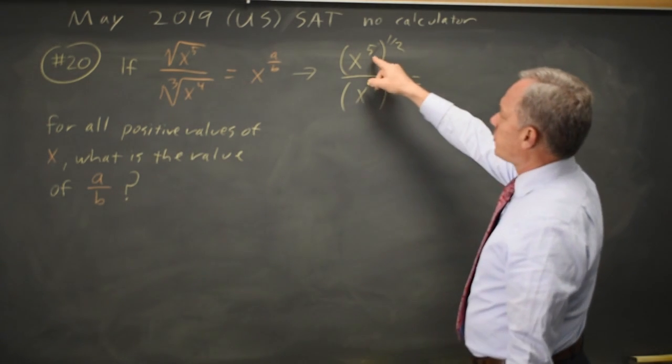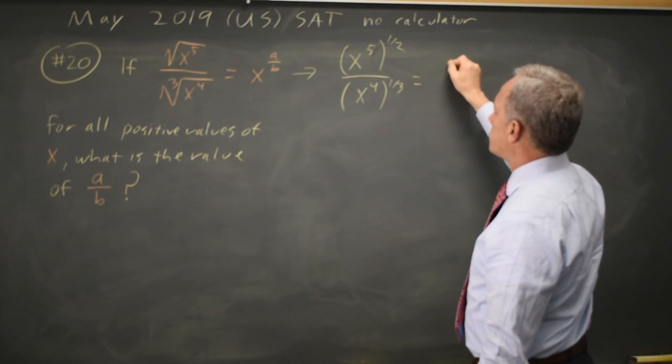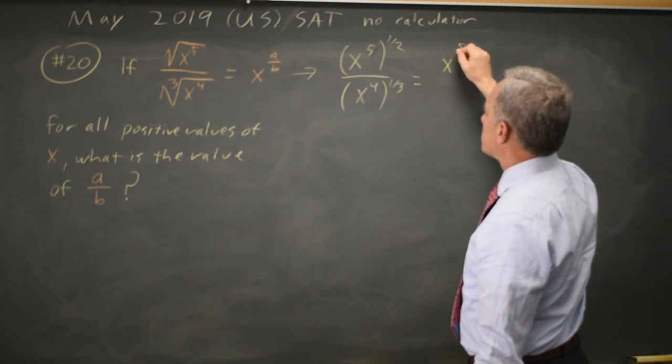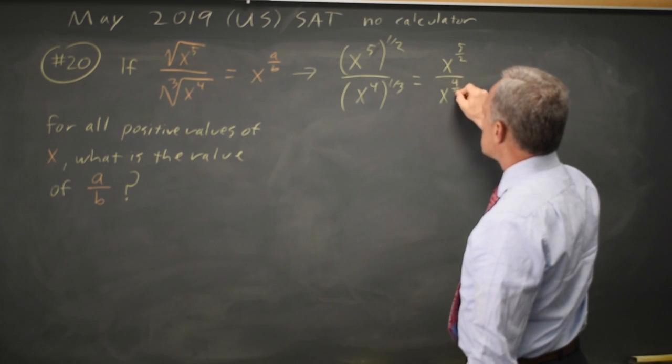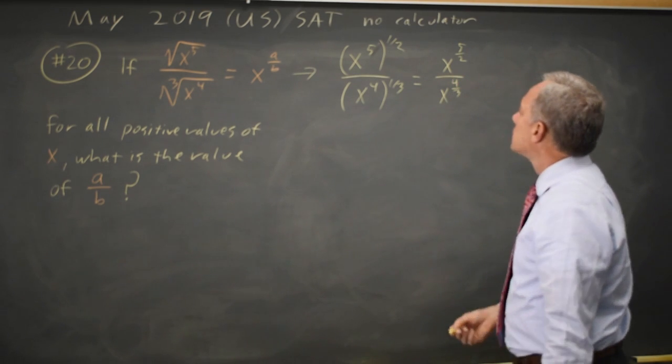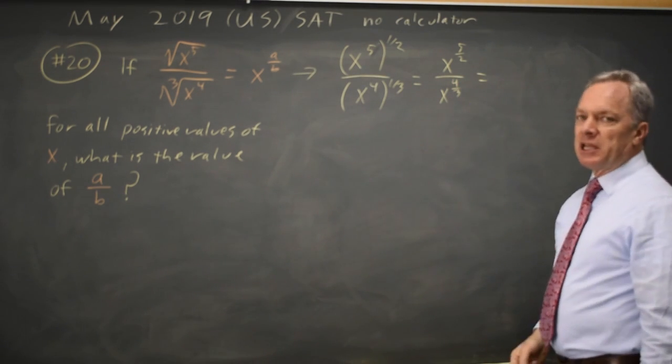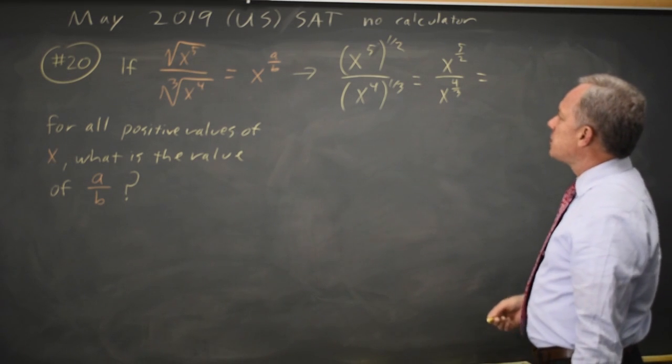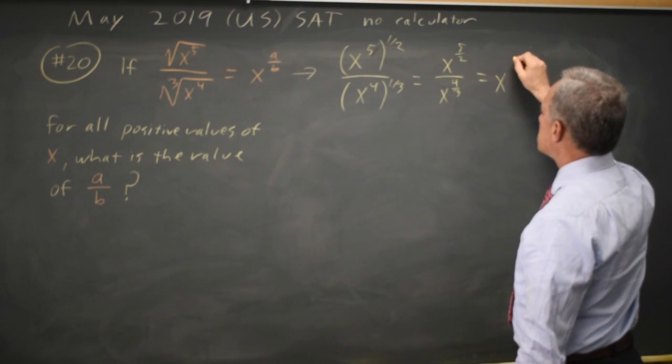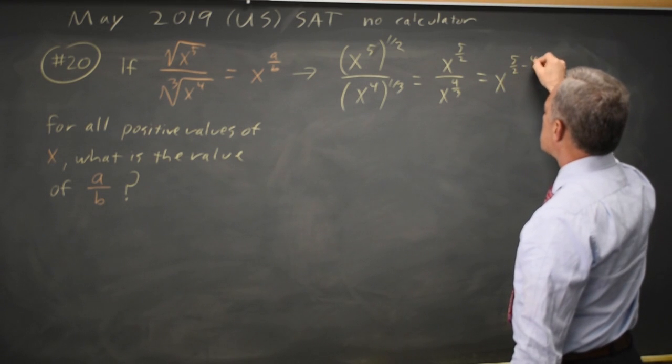And if you take a power of another power, you multiply exponents. That's x to the 5 halves over x to the 4 thirds. If you're dividing powers of the same base, you subtract exponents. That's x to the 5 halves minus 4 thirds.